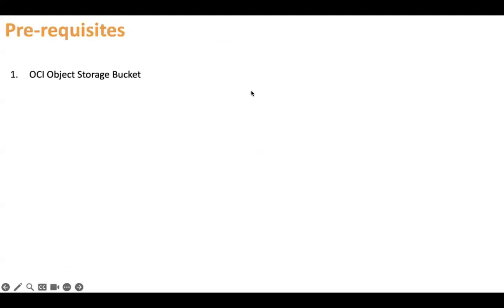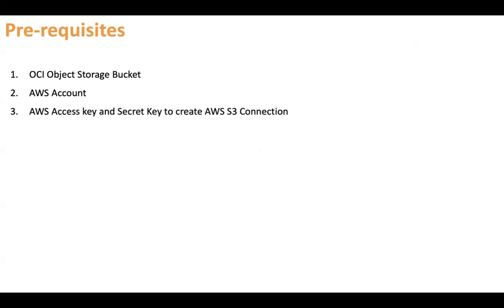As a prerequisite, you must have the OCI object storage bucket and the OCI tenancy. You must have an AWS account where you should have the S3 bucket, and you must have the AWS access key and secret key to create the AWS S3 connection. Someone from the AWS team must have created this access key and secret key. You should also have a bucket in AWS. These are the things you must have before you start building the integration.